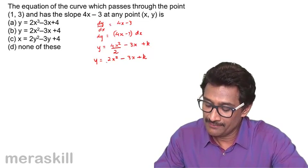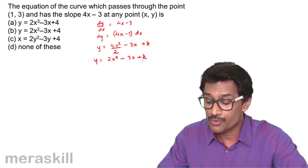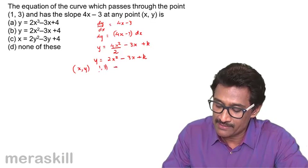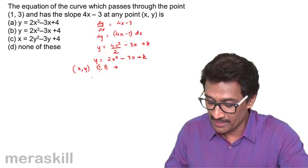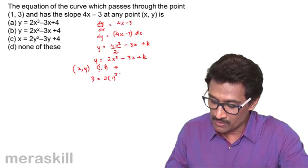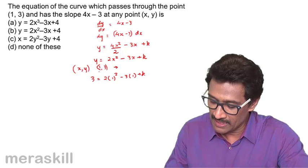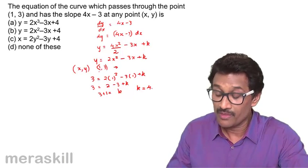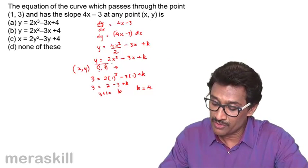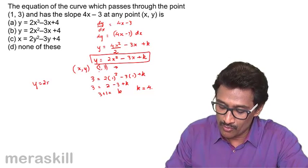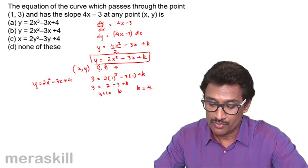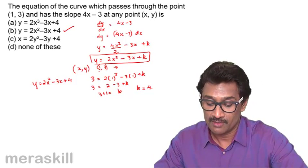We have 2x squared minus 3x plus k. It also says that the point (1, 3) lies on this curve, so it satisfies the equation. Substituting y = 3: 3 = 2 into 1 squared minus 3 into 1 plus k. So 3 = 2 minus 3 plus k, which gives k = 3 + 1, therefore k = 4. The equation of the curve is y = 2x squared minus 3x plus 4.